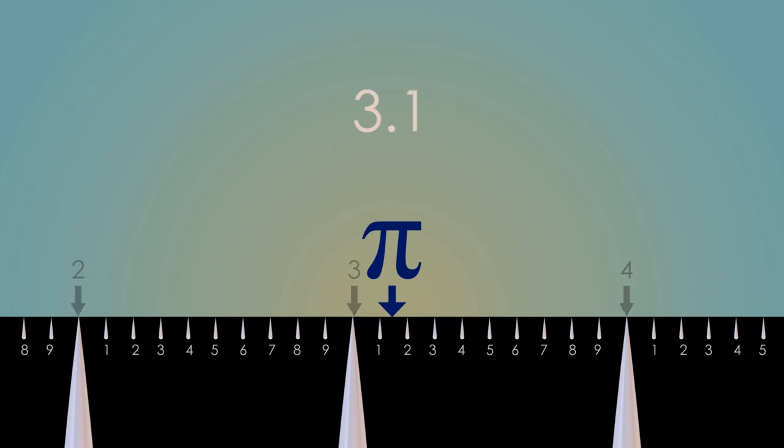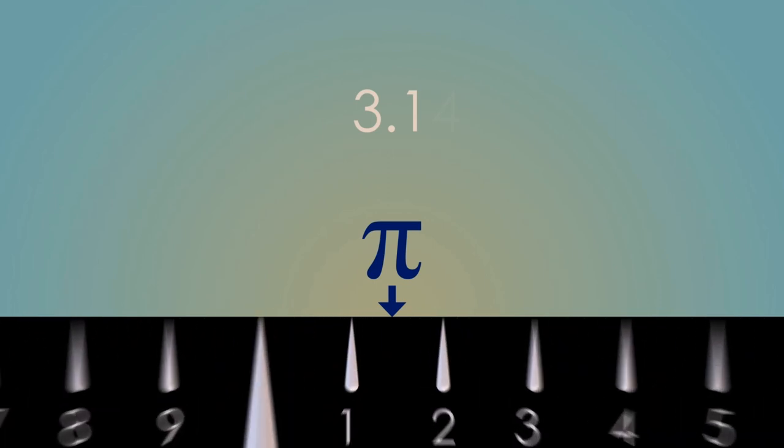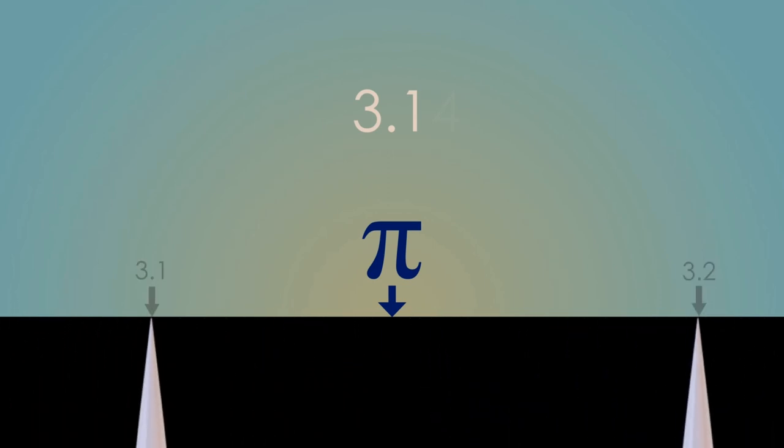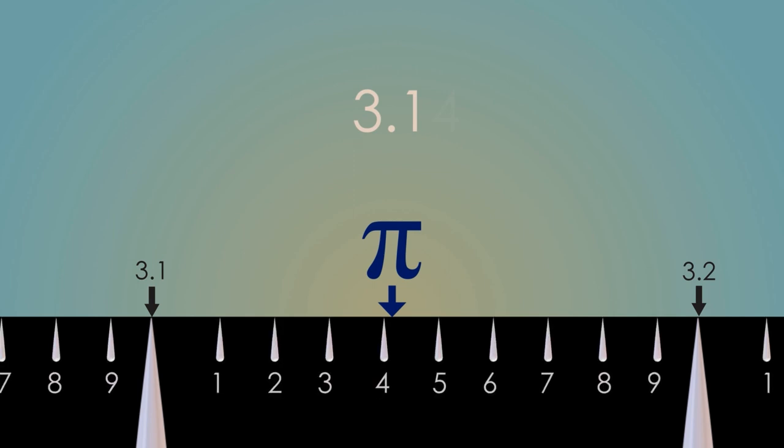If we zoom in, we can see that by dividing the space between 3.1 and 3.2 into equal tenths, that pi is just a little bit past the 4 marker. So we can get even more accurate and say pi is about 3.14, but once again, it's not exactly on 4. There's just an extra, extra, extra little bit more.